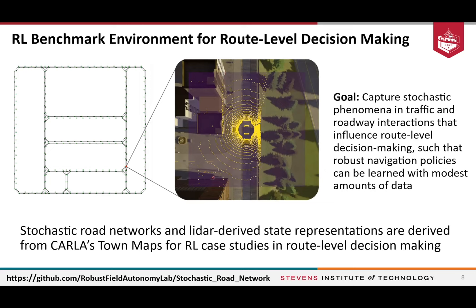One particular interest of ours is distributional reinforcement learning in terms of decision making at the route level. To ensure we can learn meaningful and accurate distributions, we wanted to start simple and look at distributions learned with respect to route-level planning actions on a road network. All CARLA road maps have been extracted into stochastic road networks that are customizable, capturing relevant stochastic phenomena in driving scenarios. We also have meaningful simulated perceptual observations — specifically, LIDAR-derived occupancy maps — mapping to each location in the CARLA environment.